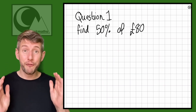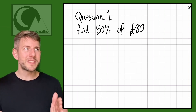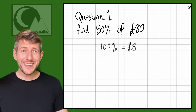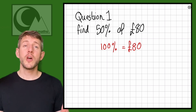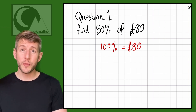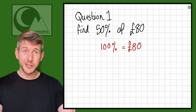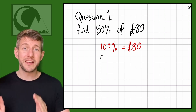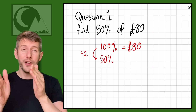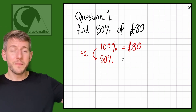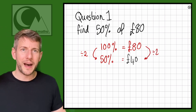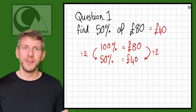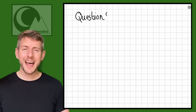Percentages follow this rule. For find 50% of 80 pounds, we say 100% is £80. In percentage questions it's always good to think about what is my 100%. To go from 100% to 50% we divide by two, because 100 divided by 2 is 50. So we do the same with our £80: £80 divided by 2 is £40. So 50% of £80 equals £40. We've halved both the percentage and the amount.